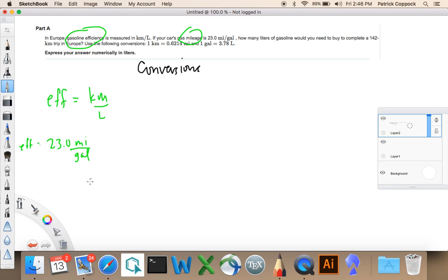How many liters of gasoline would you need to buy to complete a 142 kilometer trip in Europe? All right, so distance is equal to 142 kilometers using the following conversion. So far, I'm not really understanding much, I'm just making notes. One kilometer, 0.6214 miles, and one gallon, hope you guys don't mind the green, hope you can see everything okay, 3.78 liters.